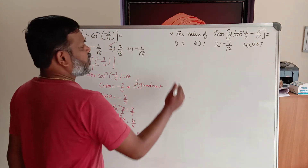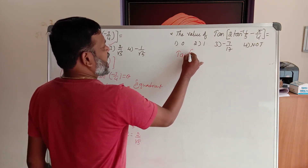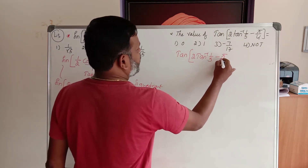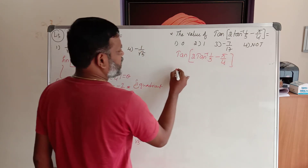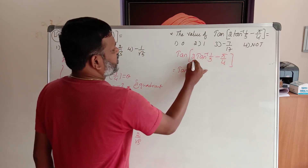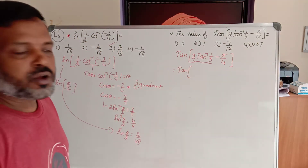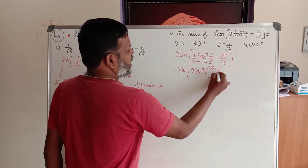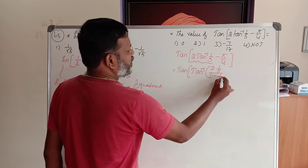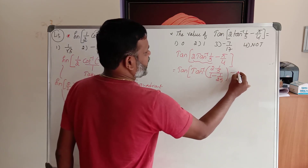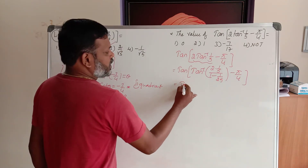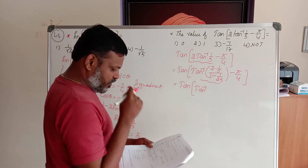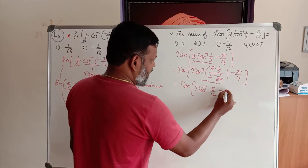The next problem: find the value of tan of (2 tan inverse 1 by 5 minus 5 by 4). This becomes tan of — for this, apply the formula 2 tan inverse x equals tan inverse of (2x divided by 1 minus x squared). So 2 into 1 by 5 divided by 1 minus 1 by 25, minus 5 by 4. By simplifying, this becomes tan of (tan inverse of 5 by 12 minus 5 by 4).